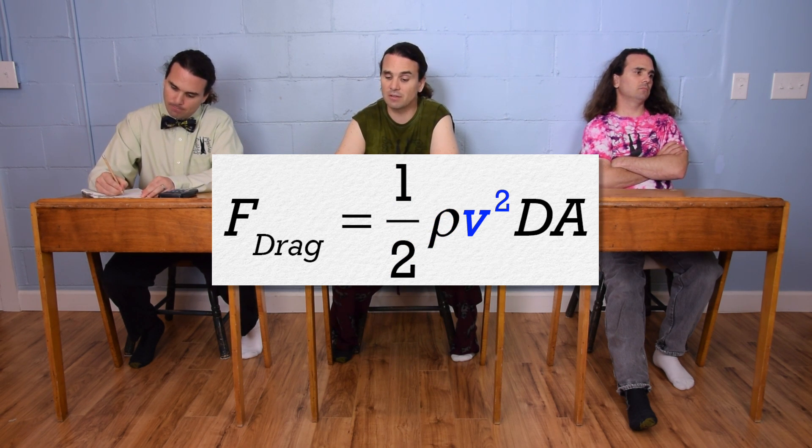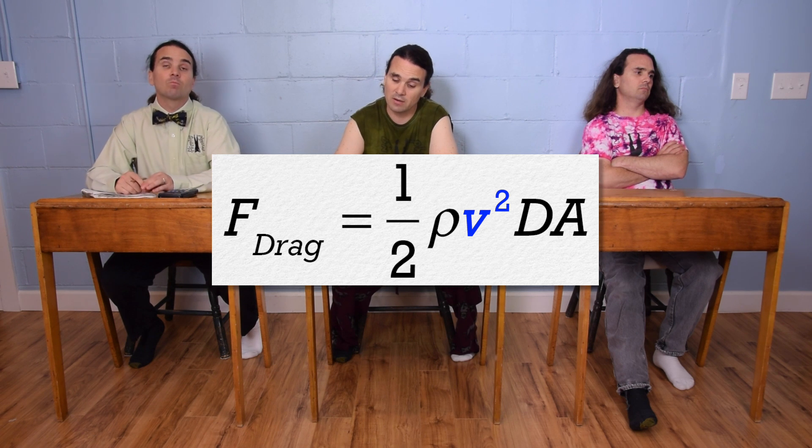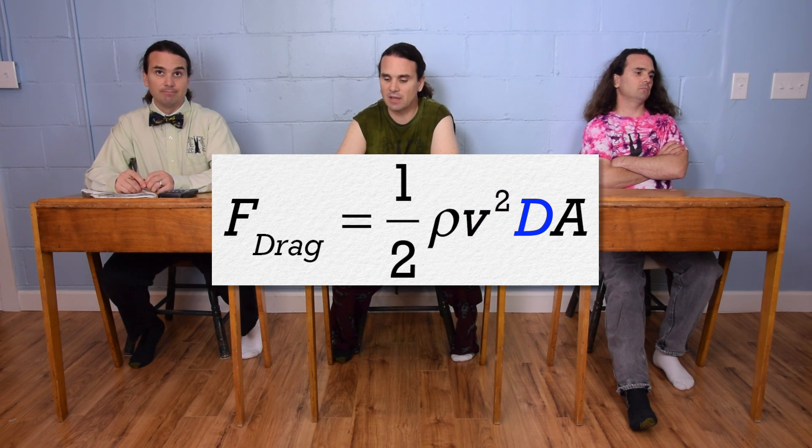times the magnitude of the velocity of the object squared, times the drag coefficient of the object, times the cross-sectional area of the object.